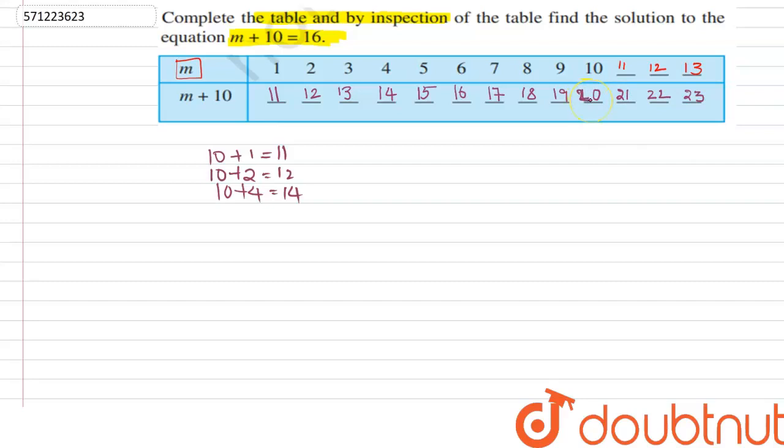Now these are our values. Looking into this table, what is the value of m where m + 10 = 16? For which value of m do we get 16? When m = 6, we get 6 + 10 = 16.